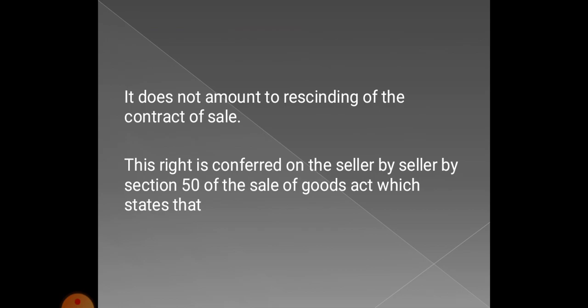Suppose the buyer becomes insolvent. The seller will have parted with the goods — meaning he has started distributing possession of the goods to the buyer. At that time, he can hold back the goods while they are still in transit. The possession has not fully transferred yet, but since the buyer is unable to make payment, he can stop the goods right there. This right of stoppage in transit does not amount to the rescinding — that is, cancellation — of the contract of sale.